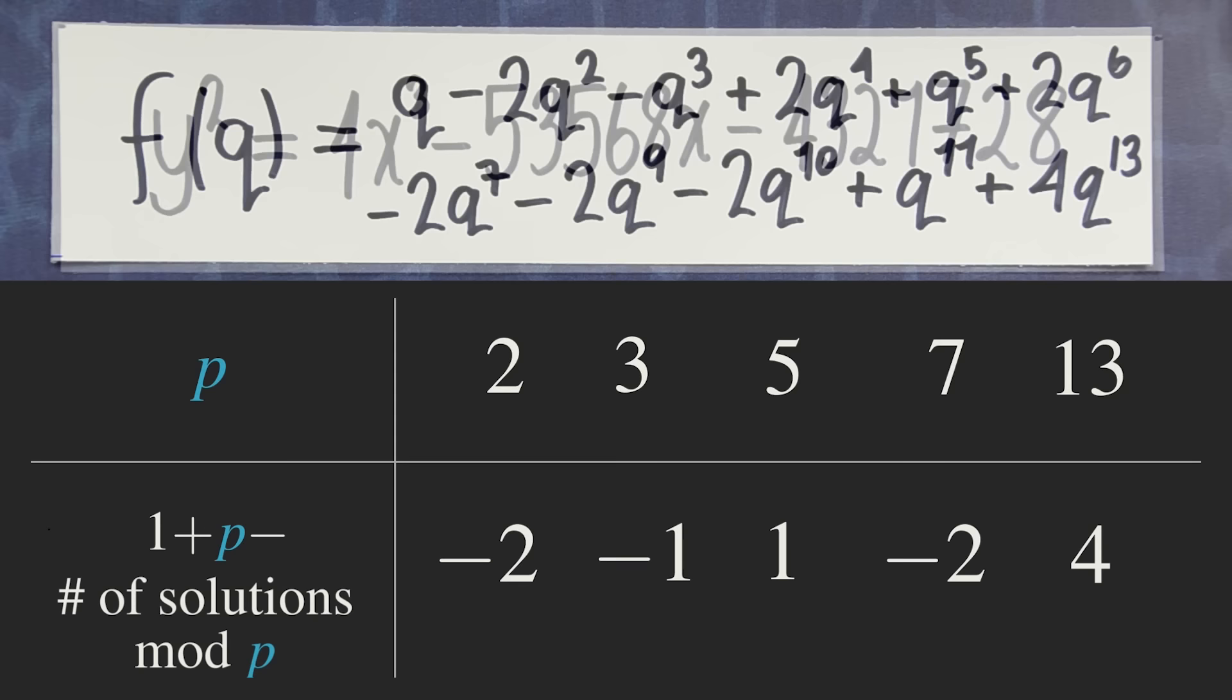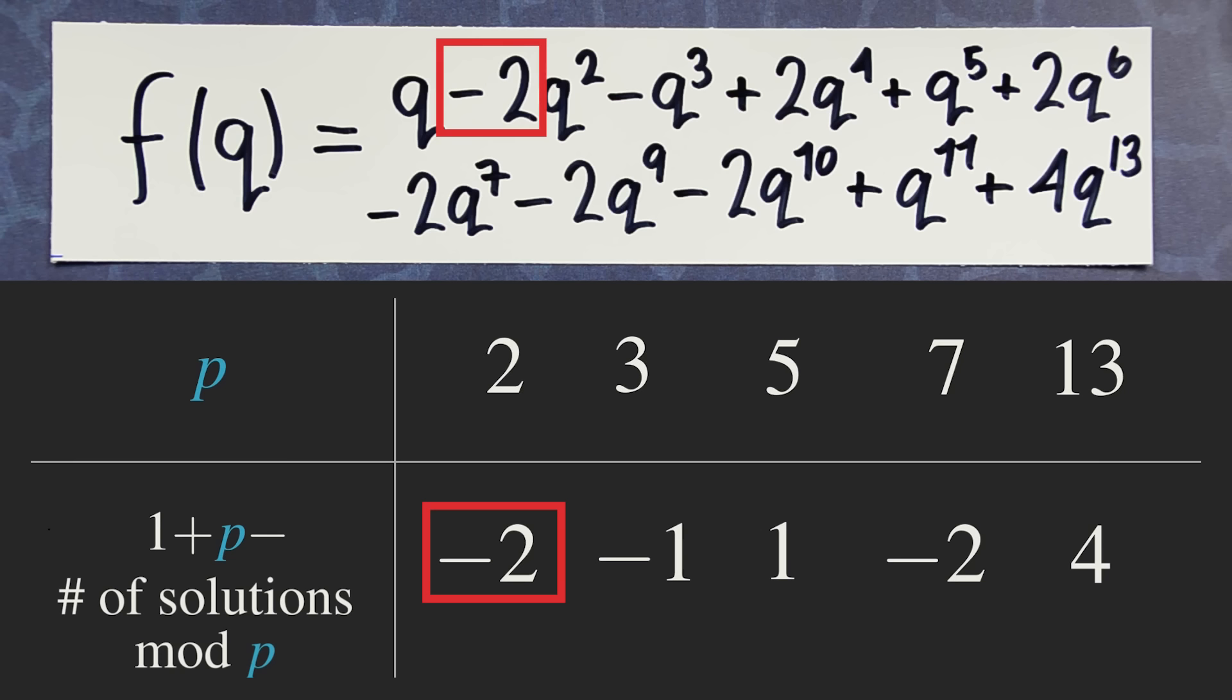For example, the number here is -2, and the second coefficient of our modular form is -2. The number here is -1, and the third coefficient of the modular form is -1. Likewise for all the other numbers.